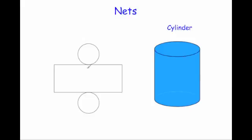Next, a cylinder. A cylinder consists of a curved surface — that's just a rectangle which folds around — and then you've got the circle for the top and the circle for the bottom. So that's the net for a cylinder.